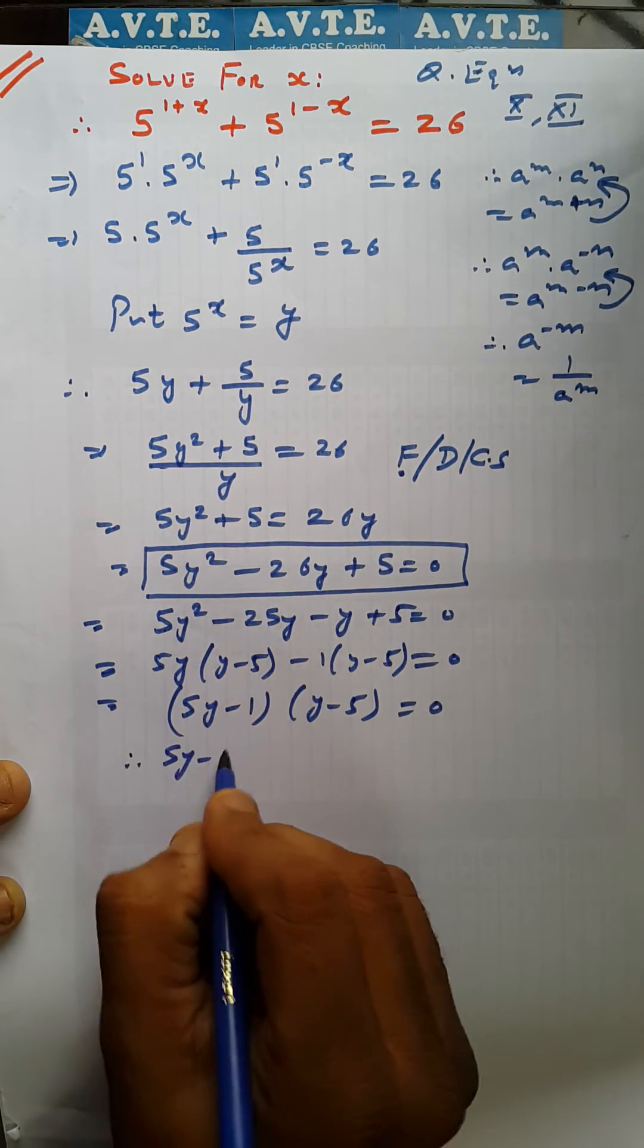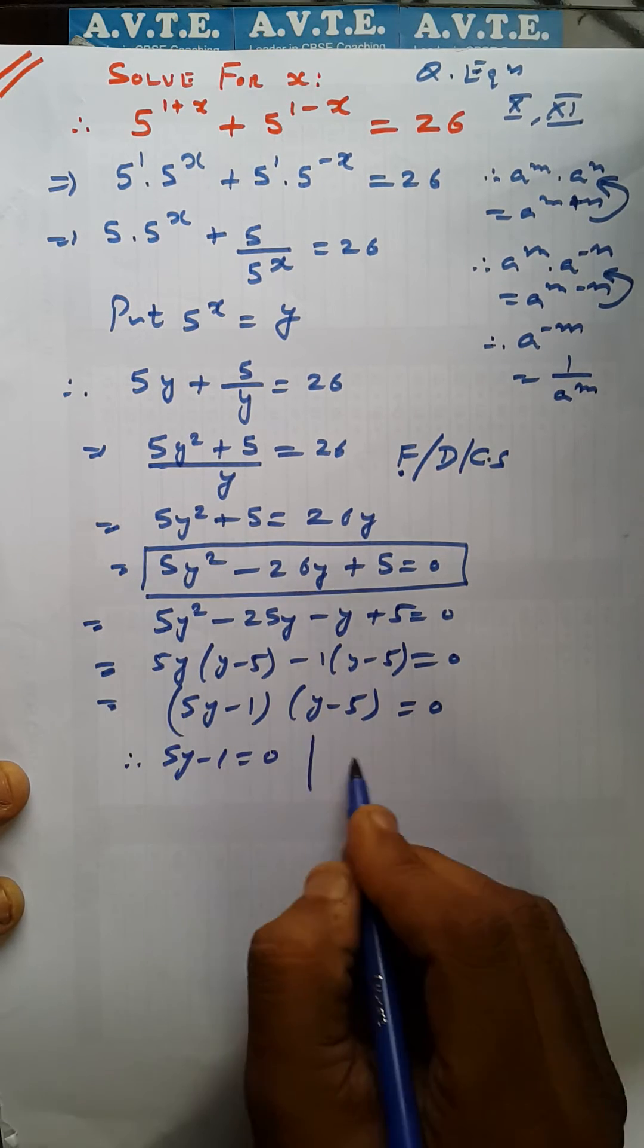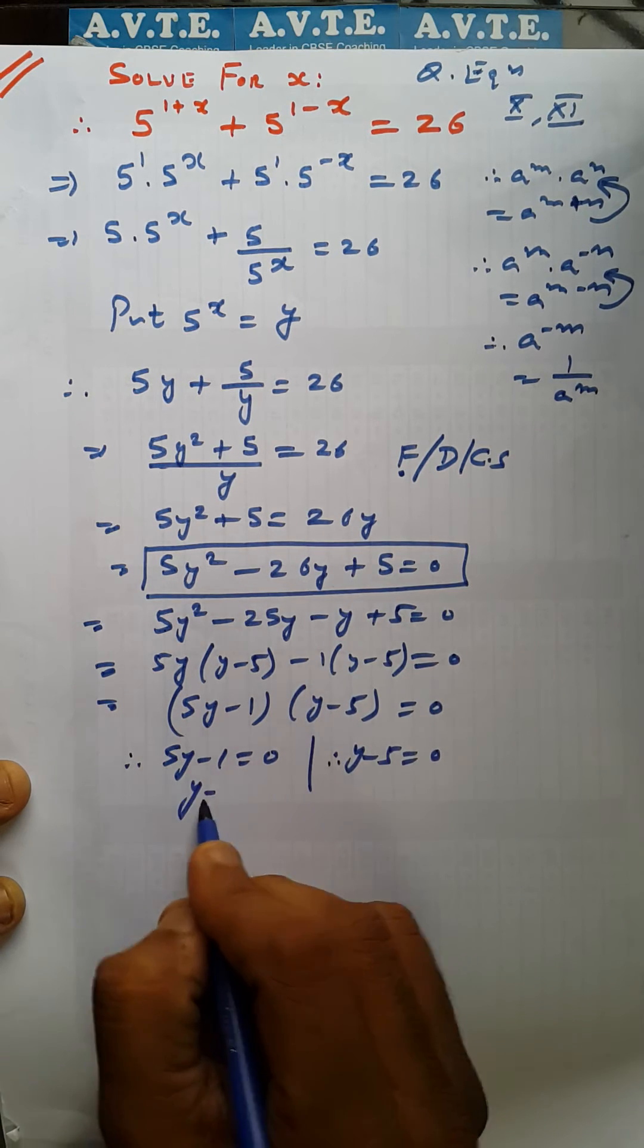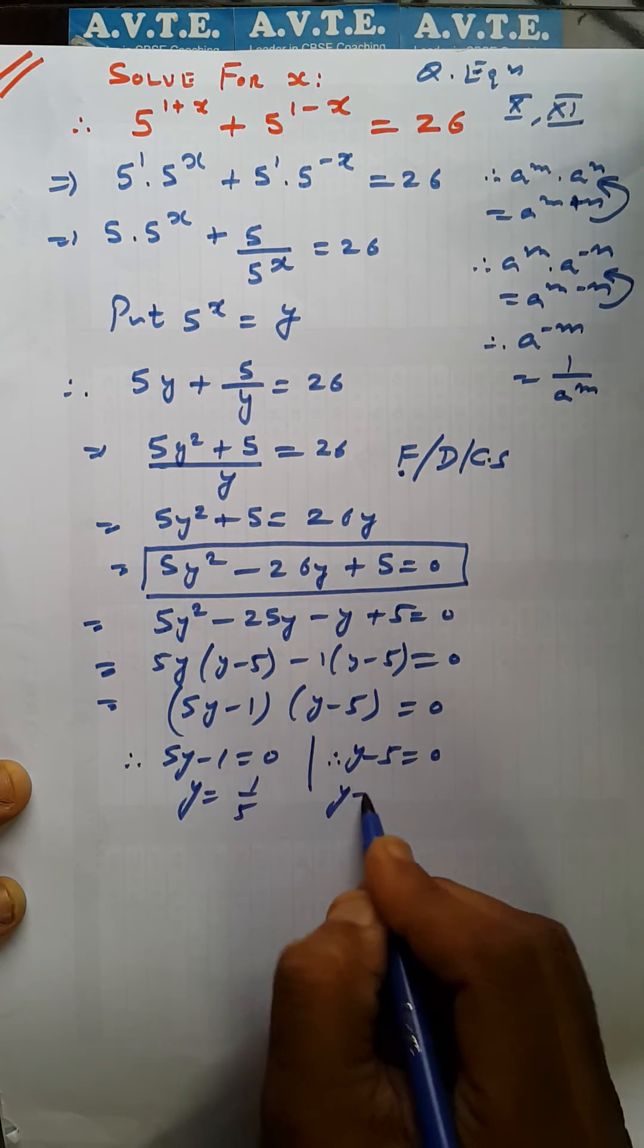Now 5y minus 1 is equal to 0. The product of two things is 0, either of them is 0. So y is equal to 1 by 5. Y is equal to 5.